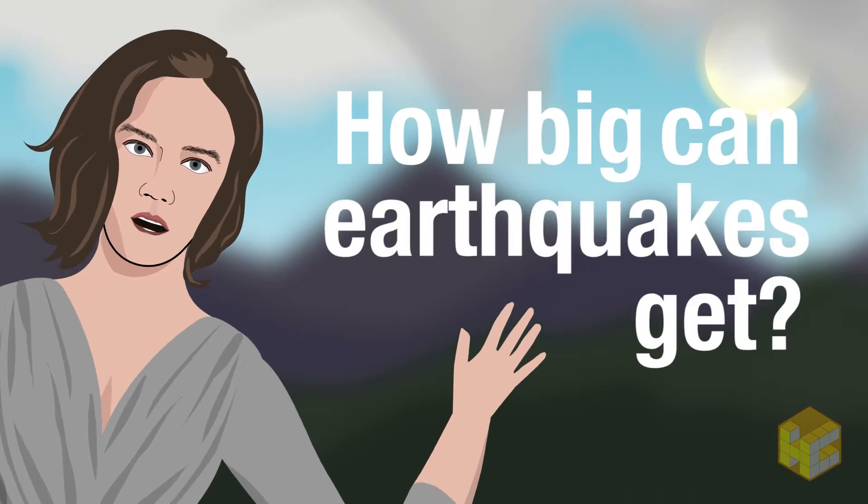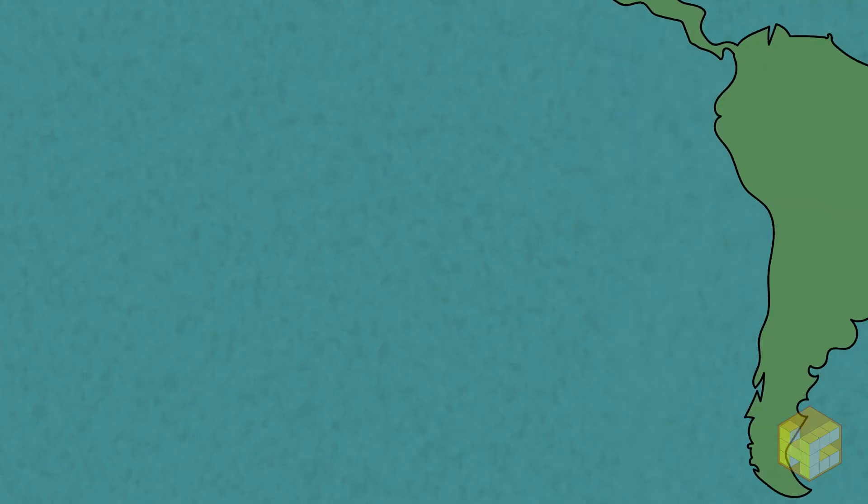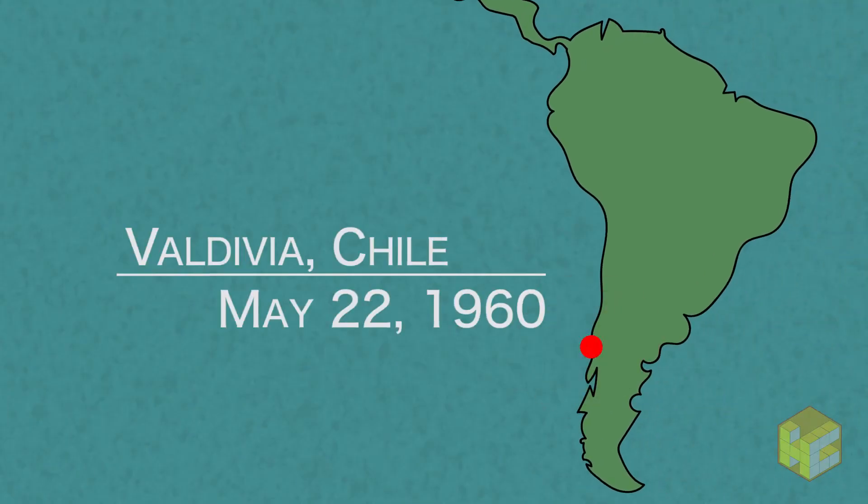How big can earthquakes get? Well, the largest recorded earthquake was a 9.5 on the Richter scale and it hit near Valdivia, Chile on May 22, 1960.